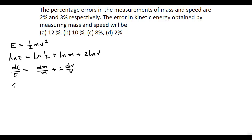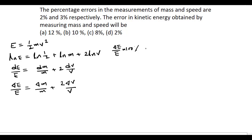So the error: δE/E = δm/m + 2·δv/v. Converting to percentage: (δE/E)×100% = (δm/m)×100% + 2×(δv/v)×100%.